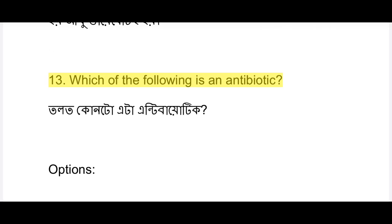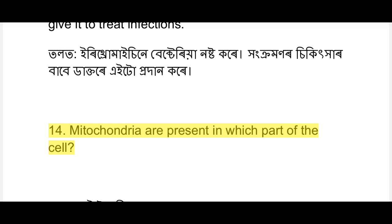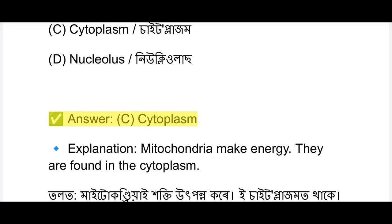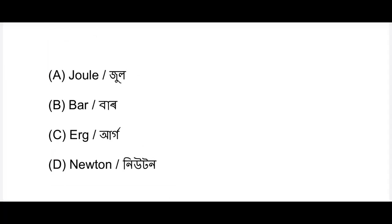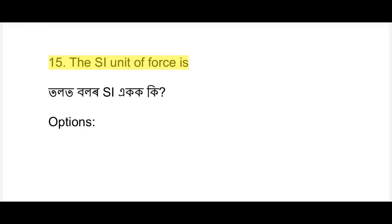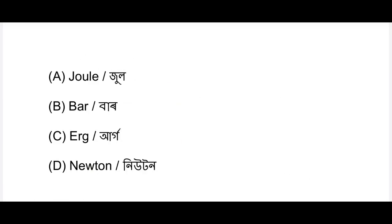Which of the following is an antibiotic? Look at the options and choose the best one. Next: mitochondria are present in which part of the cell? They are in the cell and produce energy. For SI units: force is measured in Newton, energy in Joule. Choose the first option.